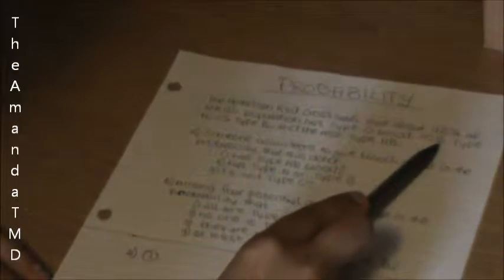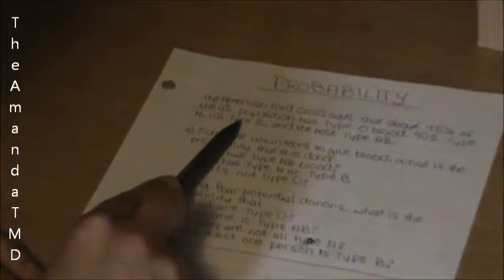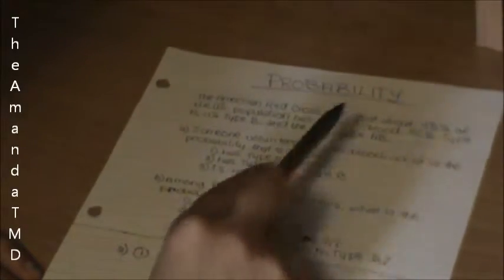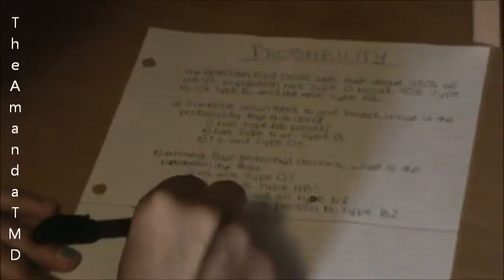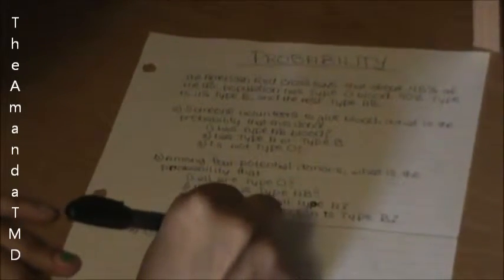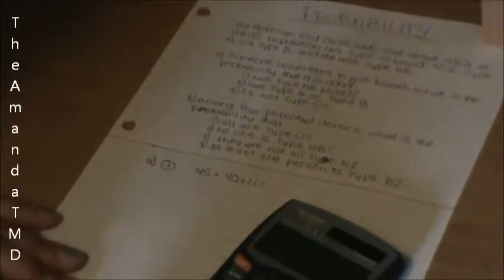In the question, you're given that 40% is type A, 11% is type B, and 45% is type O. That will just be that you total those. 45 plus 40 plus 11 gives you 96.